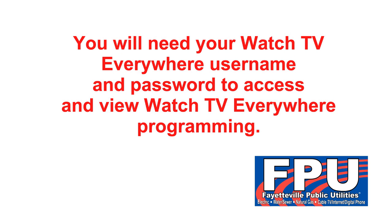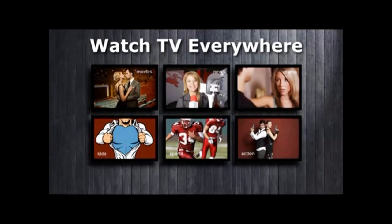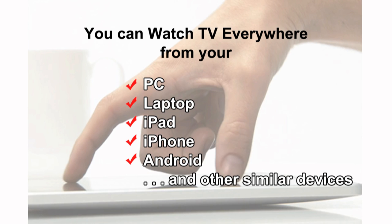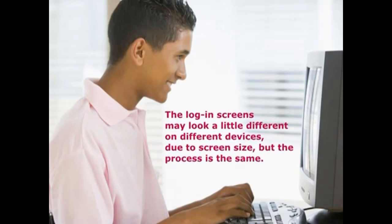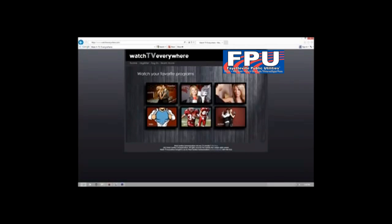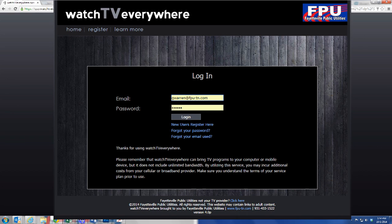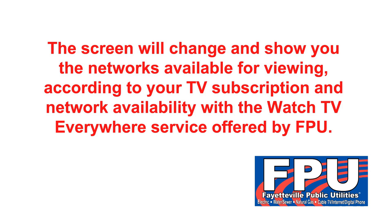You will see that your Watch TV Everywhere account has been successfully created. You will need your Watch TV Everywhere username and password to access and view Watch TV Everywhere programming. You are now ready to watch TV everywhere from your PC, laptop, iPad, iPhone, Android, or similar device. For a quick demonstration, I'm using a PC. The login screens may look a little different on various devices due to screen size, but the process is the same. Select login at the top of the screen, enter the email address and password that you created during the registration process, and click login. The screen will change and show you the networks available for viewing according to your TV subscription and network availability with Watch TV Everywhere service offered by FPU.